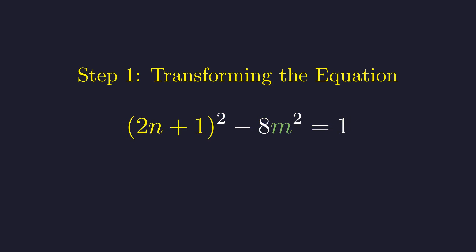Let's define new integer variables to simplify this. Let x equal 2n plus 1 and let y equal m. This is an instance of Pell's equation, a famous Diophantine equation. Finding integer solutions to our original problem is equivalent to finding integer solutions to this equation.